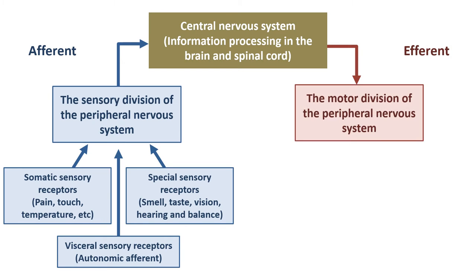What about our efferent pathways? These are the pathways coming out of the central nervous system, whether it be the brain or the spinal cord. This is the motor division of the peripheral nervous system. You might think with the name motor division we're talking solely about skeletal muscle - we're not. All efferent pathways come under the motor division.